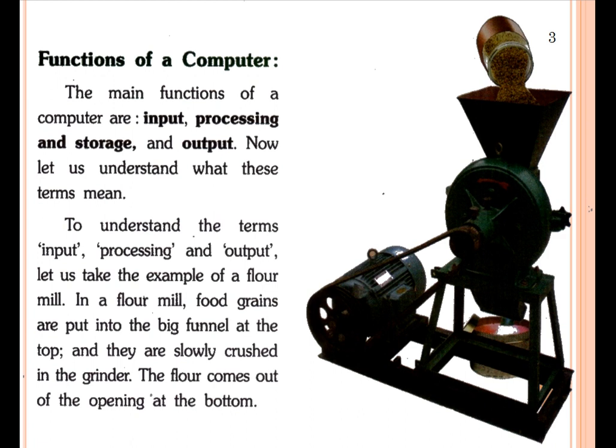To understand the terms input, processing, and output, let us take an example of a flour mill. Flour mill ka example diya gaya hai yahaan par, so hum bhi same example ke saath chalenge. In a flour mill, food grains are put into the big funnel at the top and they are slowly crushed in the grinder. The flour comes out of the opening at the bottom.